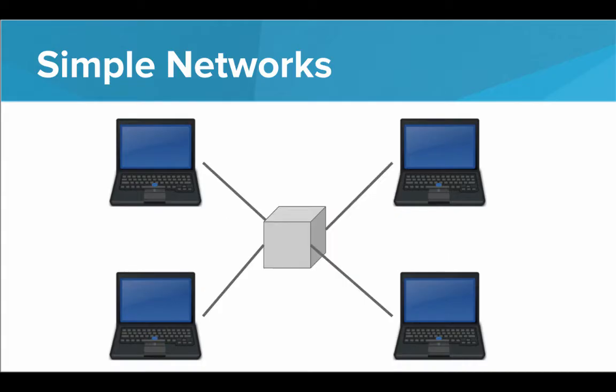So the solution is to introduce a middleman. We call it a router. In this scenario, each device only needs one connection to the router. Then the router takes care of forwarding each request to the intended recipient. If the top left computer wanted to send a message to the bottom left computer, it would tell the router, and the router would forward along that message.